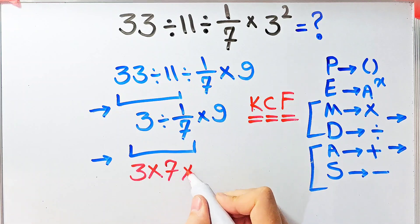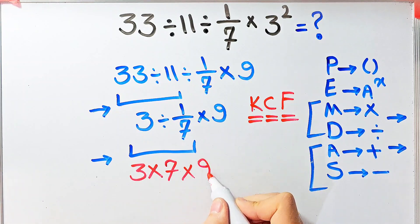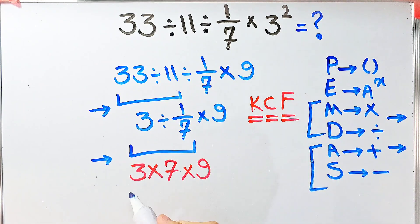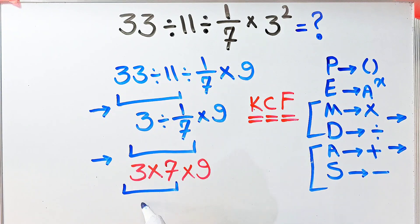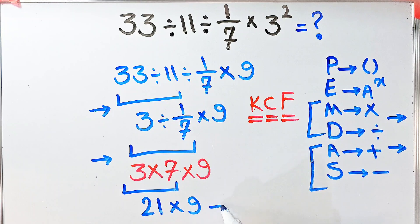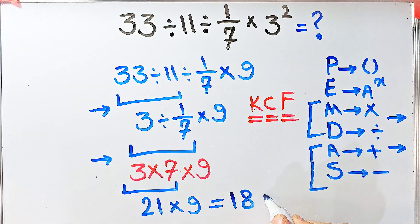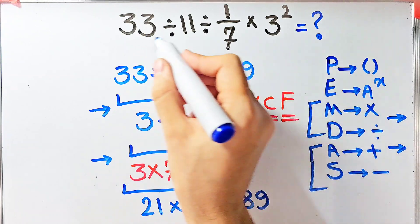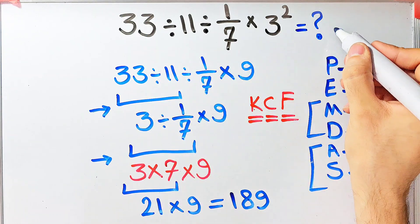Now we have 3 times 7 times 9. 3 times 7 equals 21, and 21 times 9 equals 189. The final answer of this question is 189.